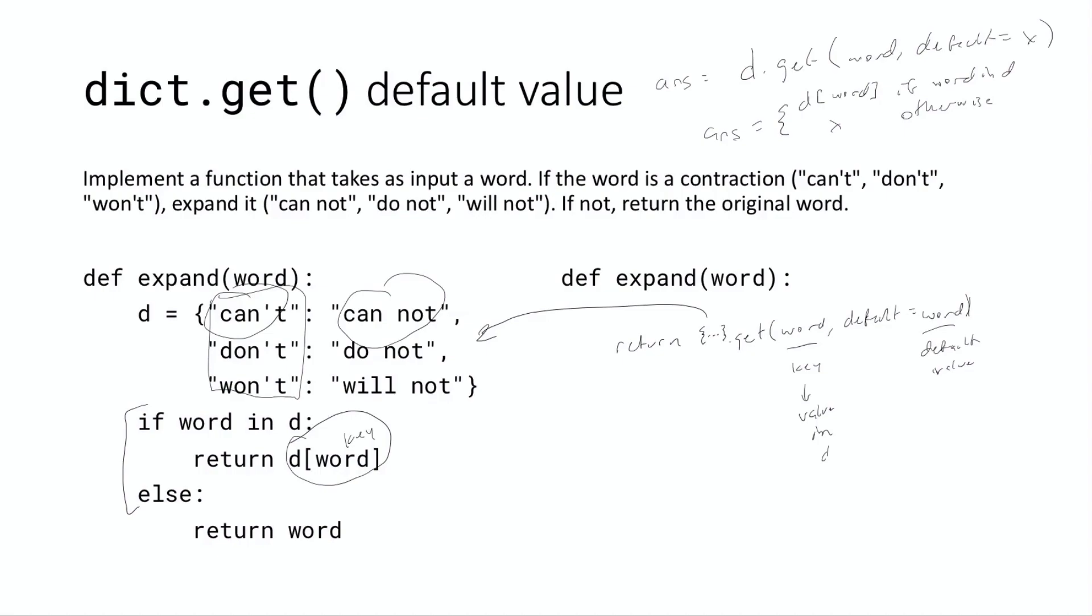The idea is if you're working with a dictionary, if you can express your problem or the solution to your problem involving a dictionary, and you want to have this default value behavior, then you can use the get function on the dictionary in order to get this behavior that you need. And this is actually useful in quite a few places. And so it's definitely a good thing to know.